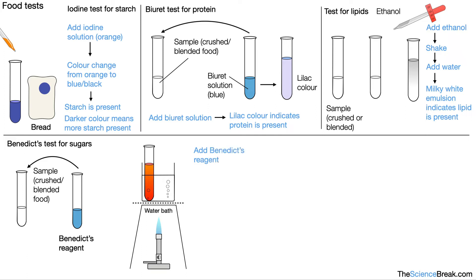So we add Benedict's reagent, usually an equal volume of Benedict's reagent. We heat in a water bath, and a color change from blue to brick red indicates the presence of sugar.